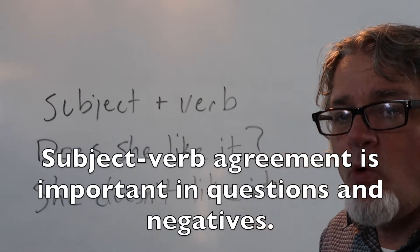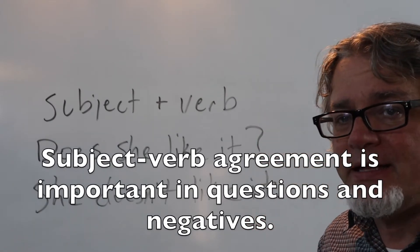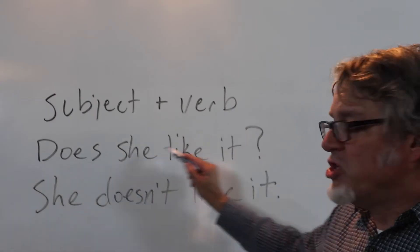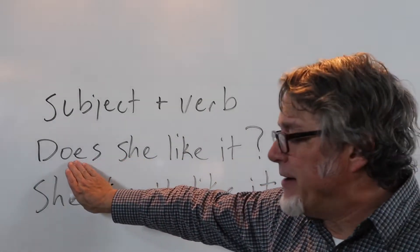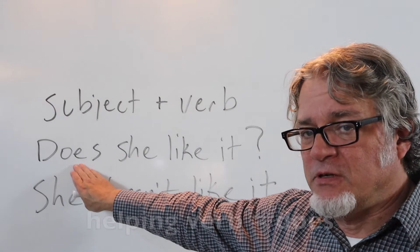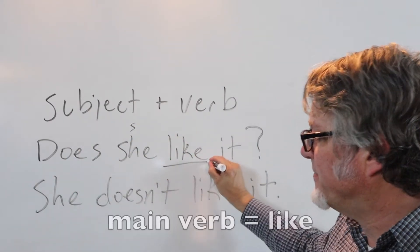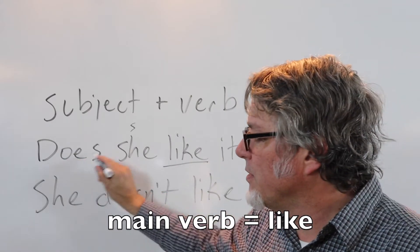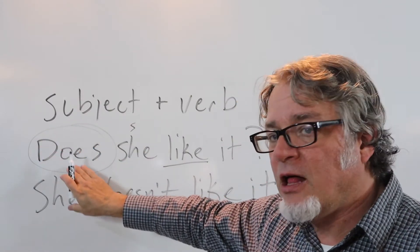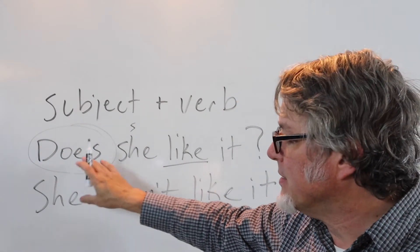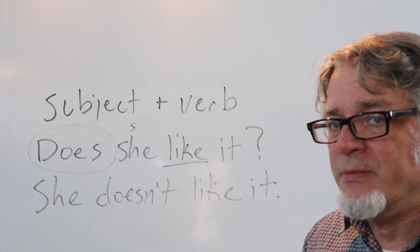Subject-verb agreement is important in questions and negatives. Does she like it? Here we have to pay attention to the helping verb. Here's the subject. This is the helping verb, and here's the main verb. So you really have to pay attention to the helping verb to make sure that the subject and the verb are in agreement.